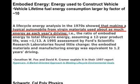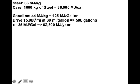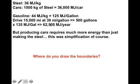Making a typical automobile from virgin materials uses about as much energy as each year's driving, assuming people drive around 15,000 miles a year. We can test this with a back-of-the-envelope calculation: steel is 36 megajoules per kilogram, and a car has about a ton of steel. Driving 15,000 miles at 30 miles per gallon is 500 gallons, multiplied by the embodied energy in gasoline, giving about 62,500 megajoules. When we consider more processes, these numbers are close enough to be the same.